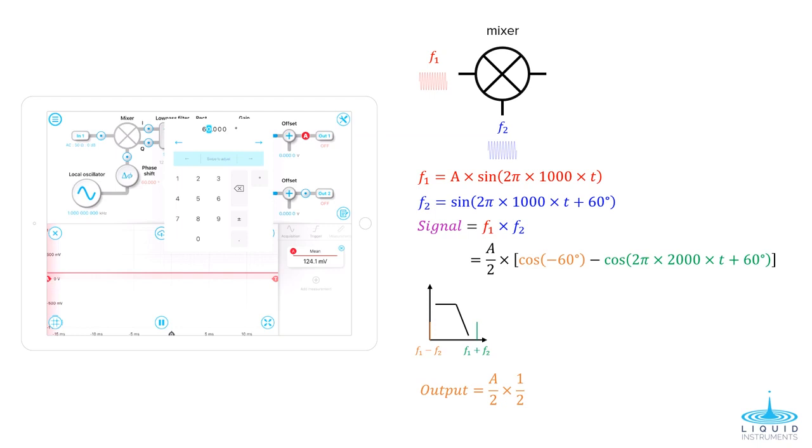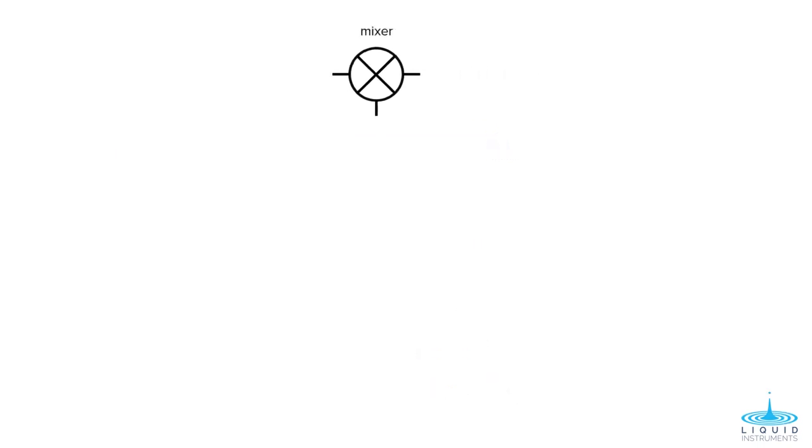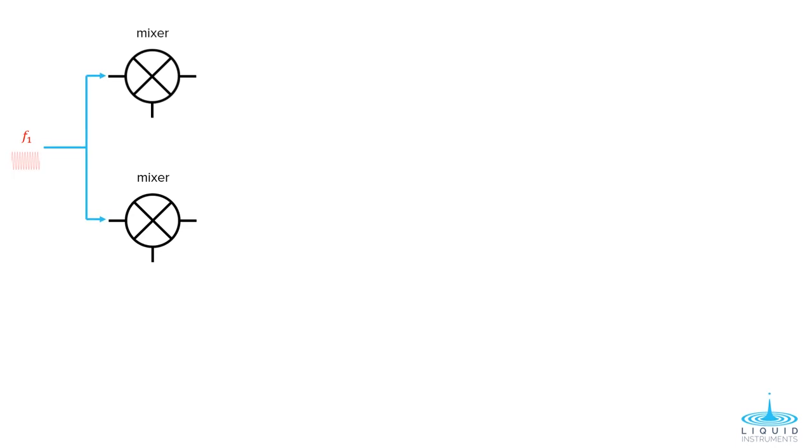To avoid the influence of phase instability, Moku Labs' lock-in amplifier implements a technique called dual-phase demodulation. Let's take a look at how this works. Instead of using a single mixer, dual-phase demodulation splits the input signal into two paths and then feeds each one into different mixers.